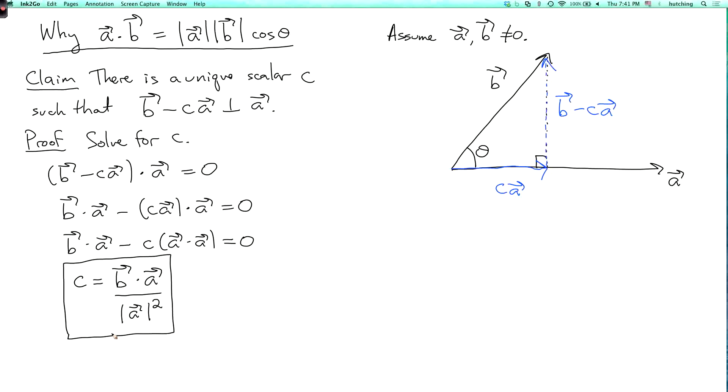And this is well defined, I'm not dividing by zero, because a is not zero, and so its length squared is not zero. It's a sum of squares, and they're not all zero.